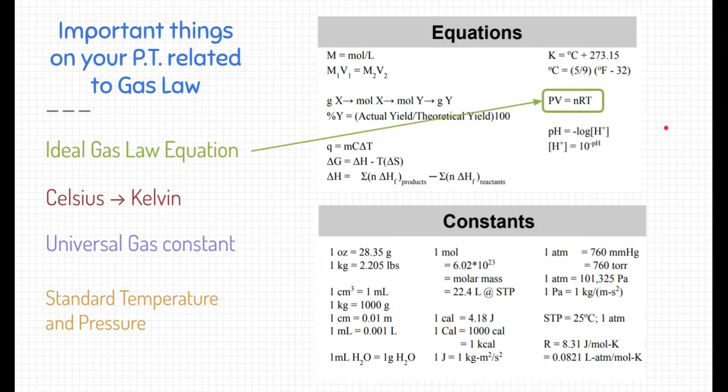The first one is the ideal gas law equation itself. Notice it's here in the equation section, so you don't need to memorize it. You just need to know that it's there and how to use it. Another equation is the conversion from Celsius to Kelvin. A lot of times we measure things in Celsius, which is not what we can use in the ideal gas law, so therefore we have to convert Celsius to Kelvin using this equation.